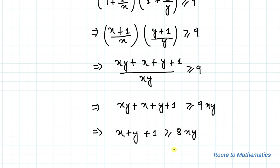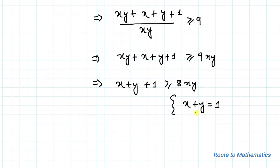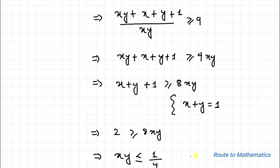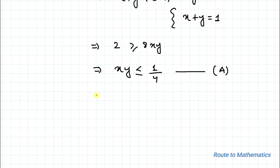Since we are given x plus y equals 1, substituting that value we get 2 greater than or equal to 8xy. This implies xy is less than or equal to 1/4. Let's call this equation A.